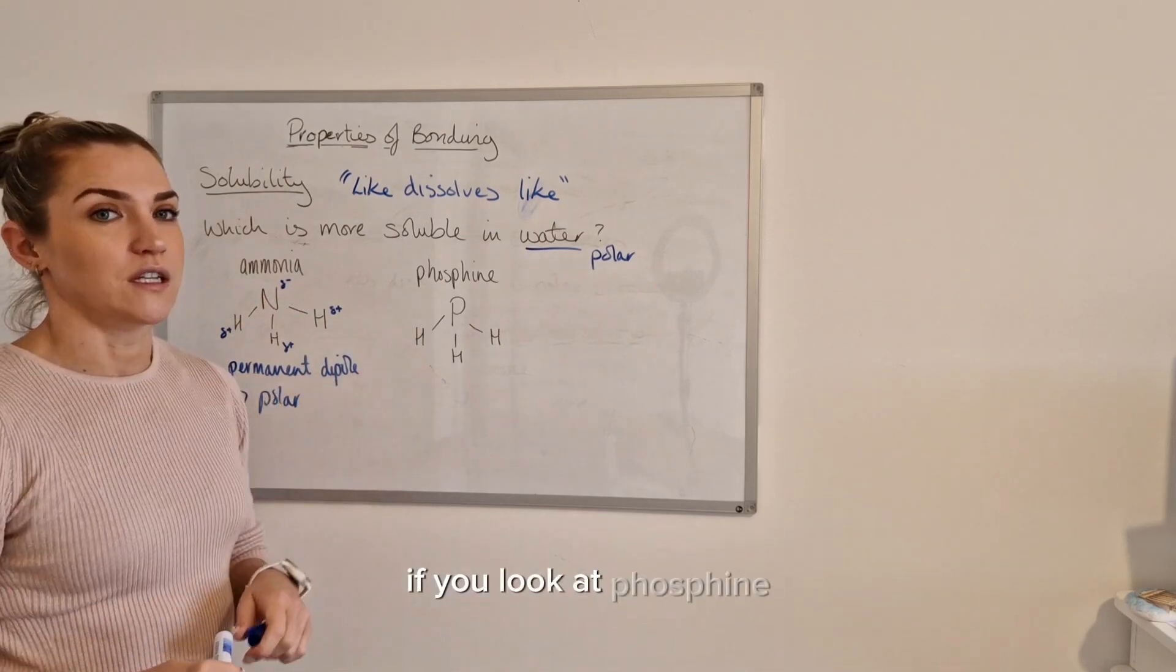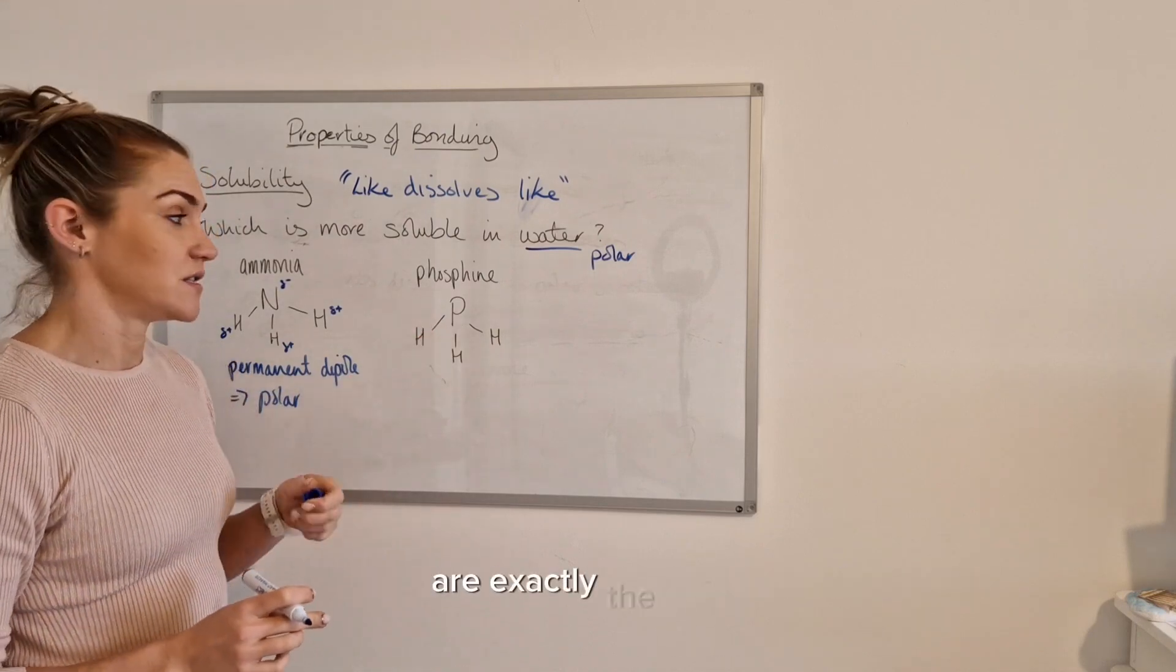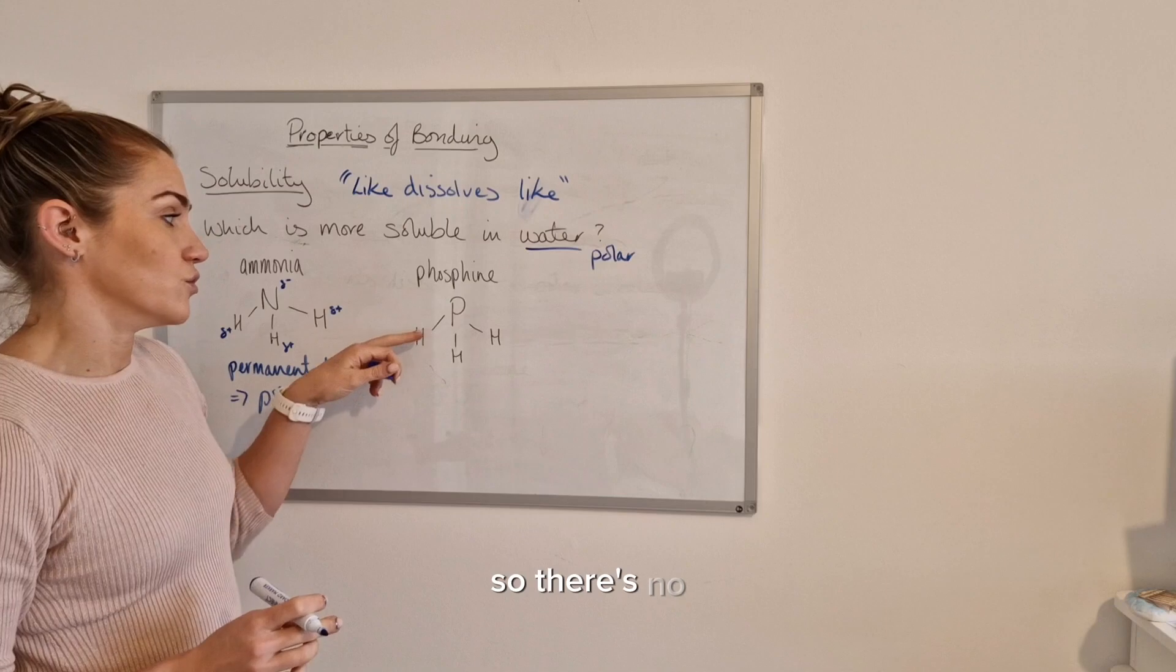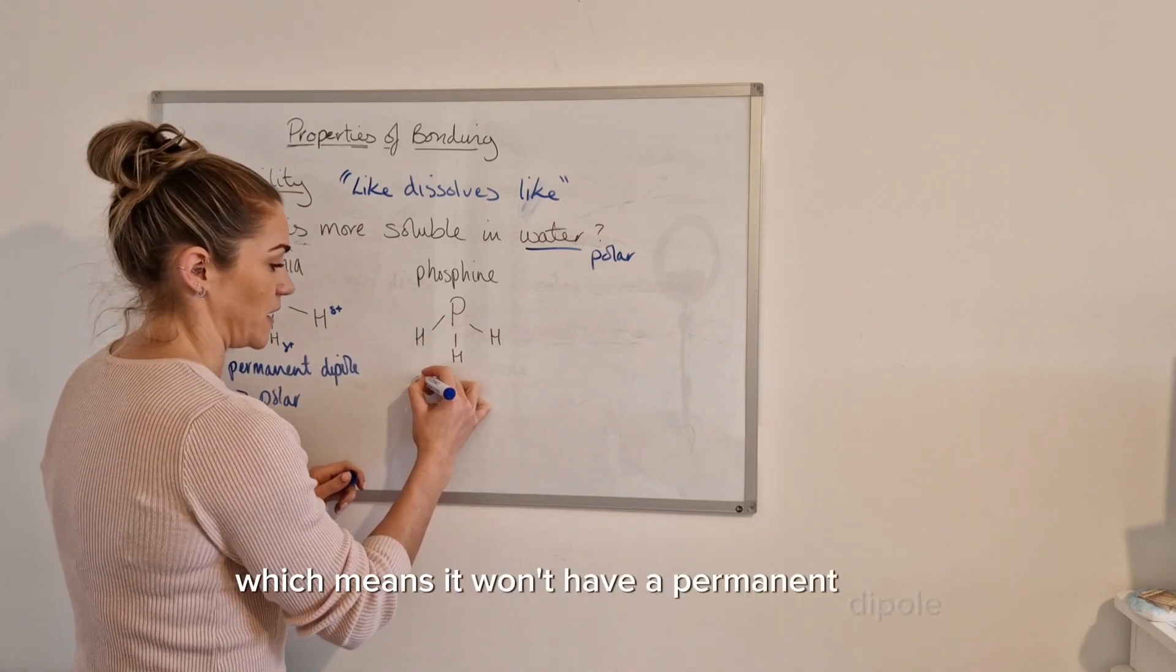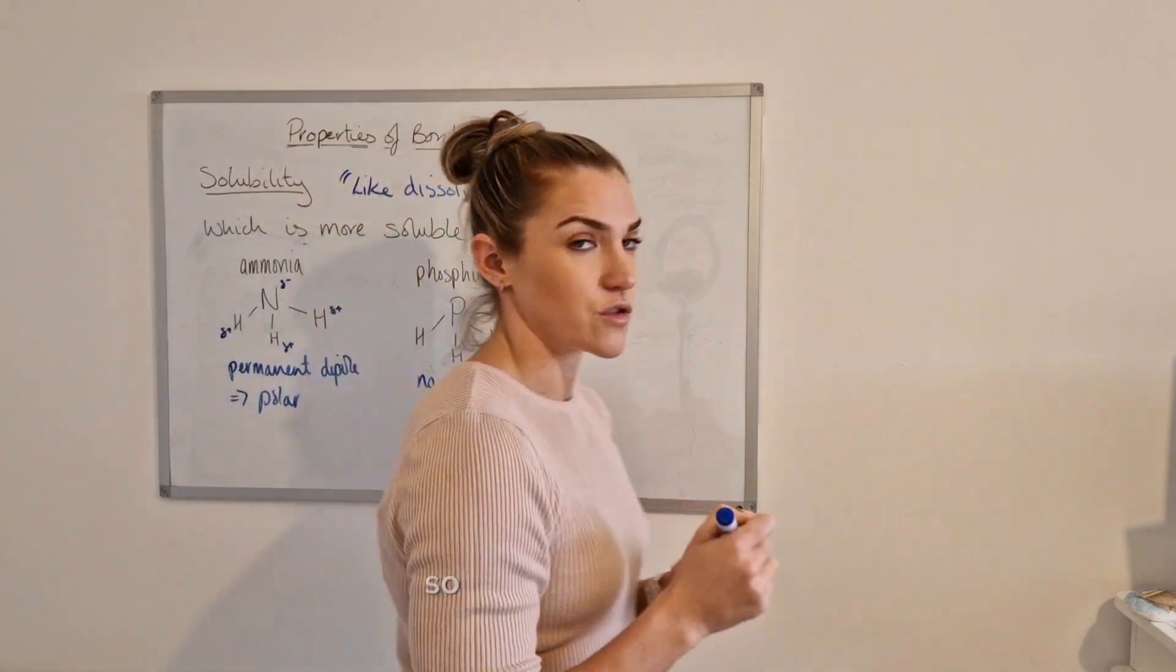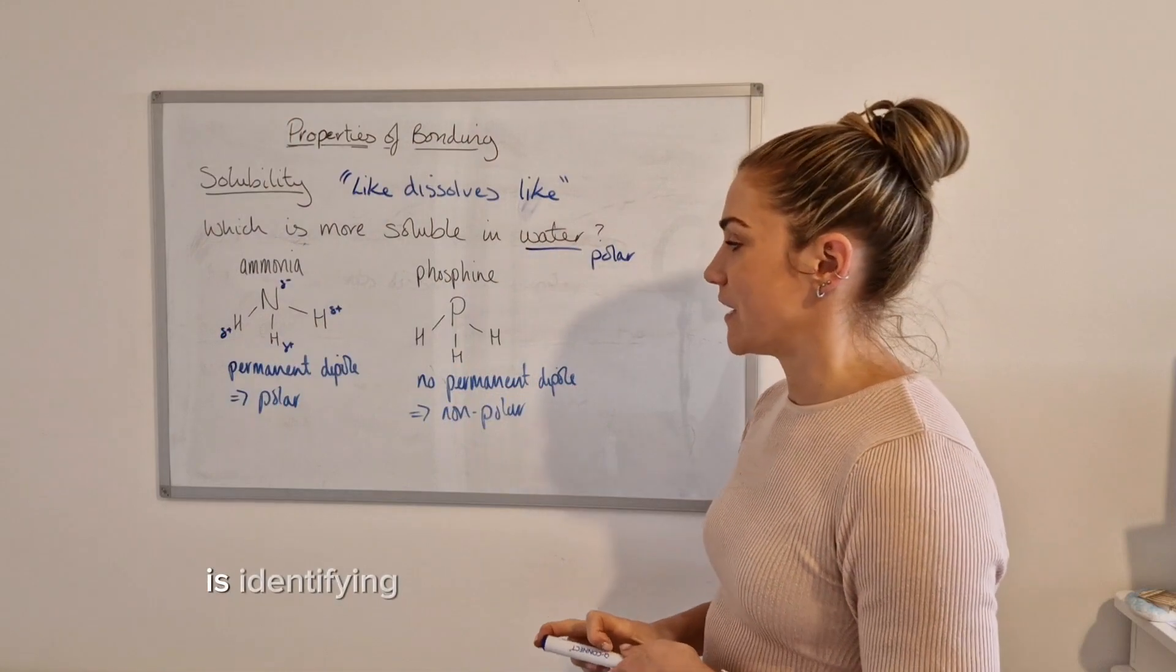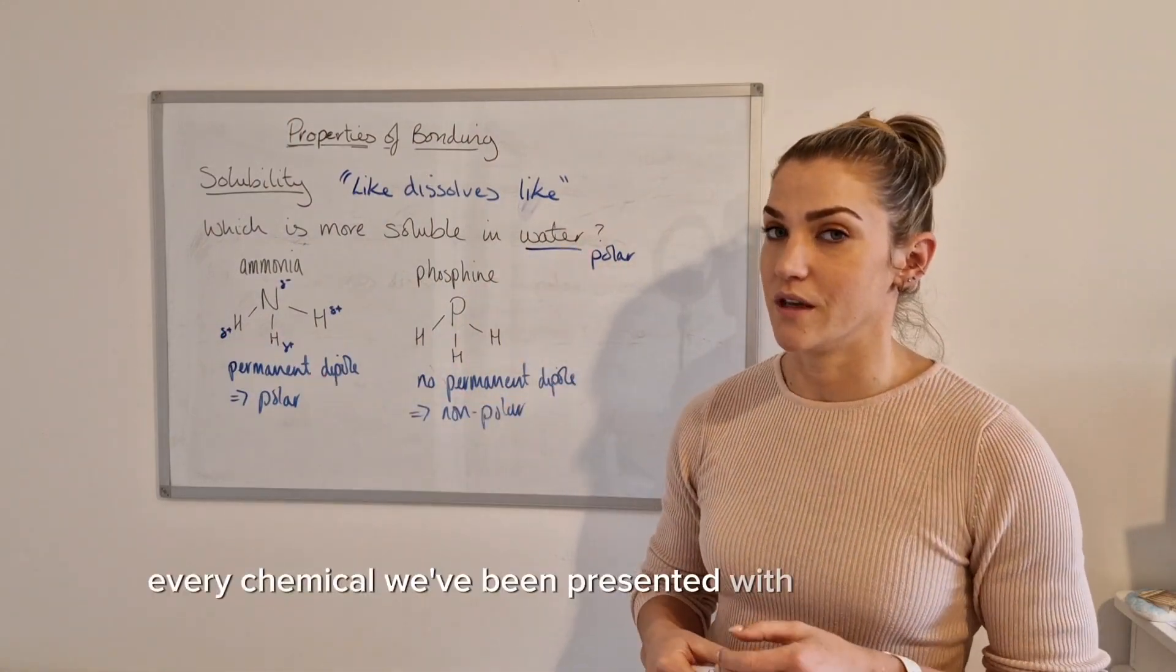If we look at phosphine, the electronegativities of phosphorus and hydrogen are exactly the same. So there's no polar covalent bonds in this molecule, which means it won't have a permanent dipole, which means it's non-polar. So that's our first step is identifying the polarity of everything we've been, every chemical we've been presented with in the question.